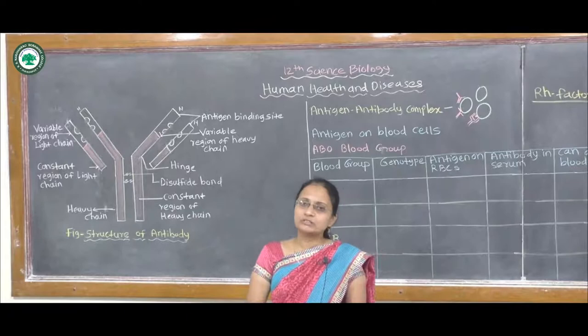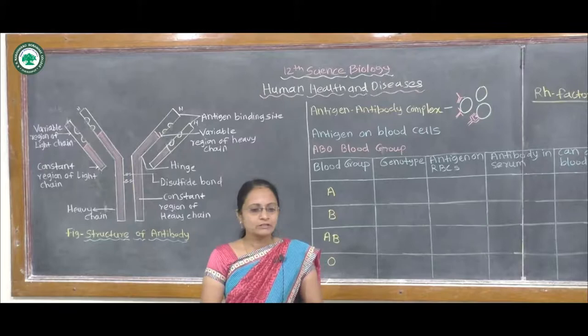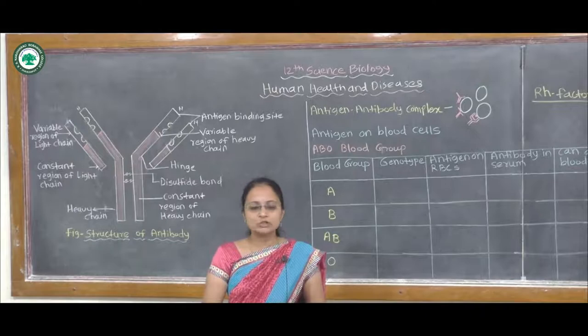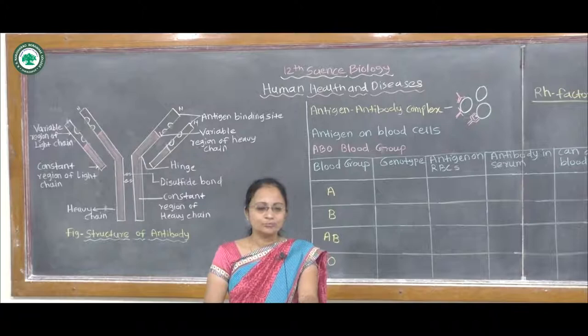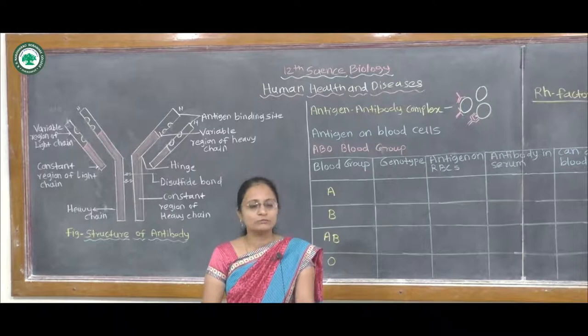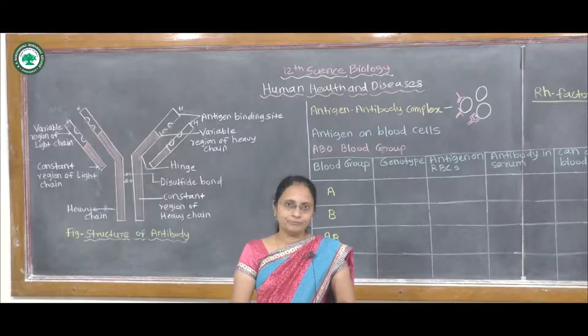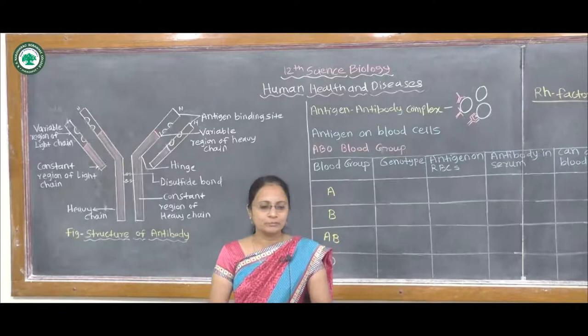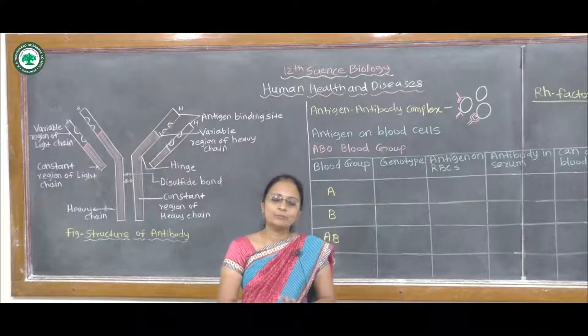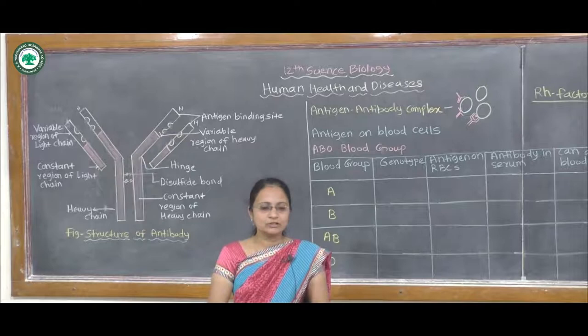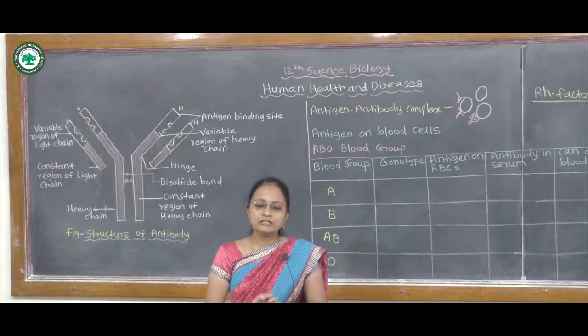The ABO blood group was discovered by the scientist Landsteiner in 1900, and the AB blood group was discovered by Landsteiner's students Decastello and Sturli in 1902. Landsteiner was awarded the Nobel Prize for this discovery of human blood groups. He found that two antigens or agglutinins are present on the surface of human RBCs, and named them as the A and B antigens. In response to these A and B antigens, he noticed corresponding antibodies or agglutinins present in serum, which are called A and B antibodies.